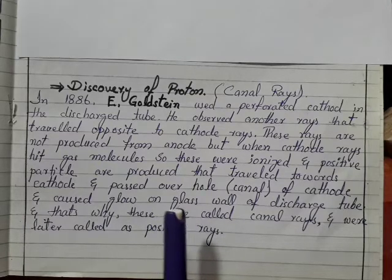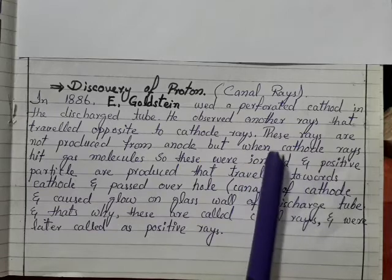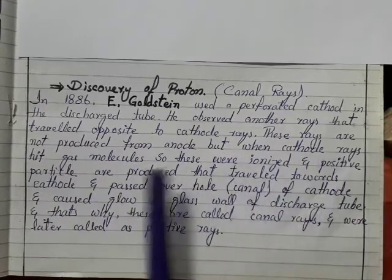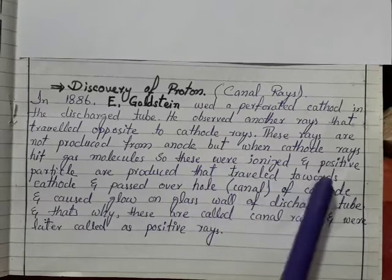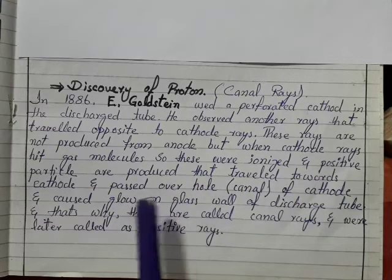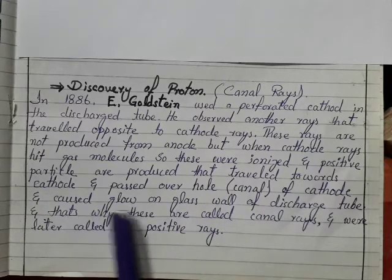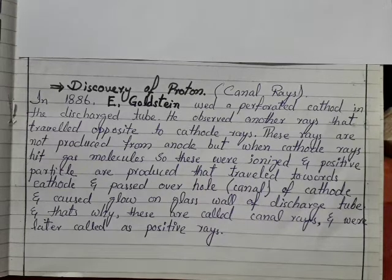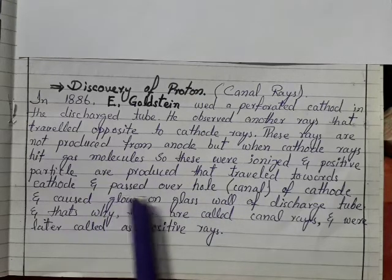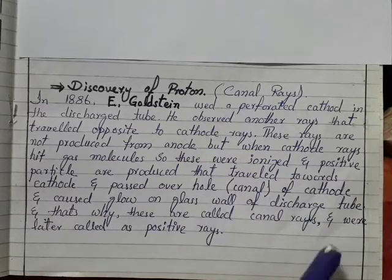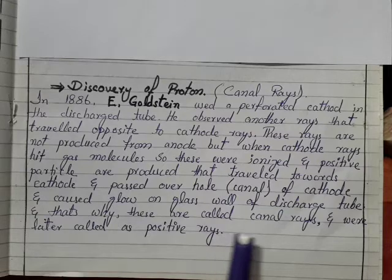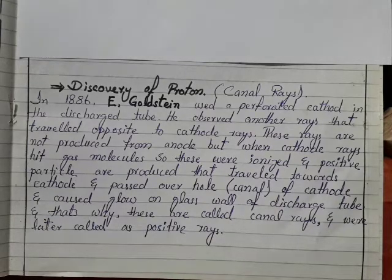The gas molecules present in the discharge tube were ionized and positive particles were produced. They traveled toward the cathode and passed over the holes in the cathode, creating a glow on the glass wall. That is why these were called canal rays and were later called positive rays.